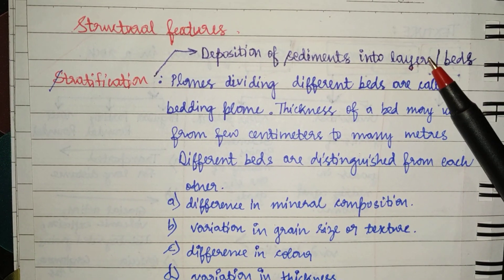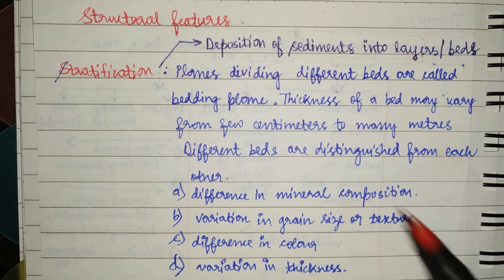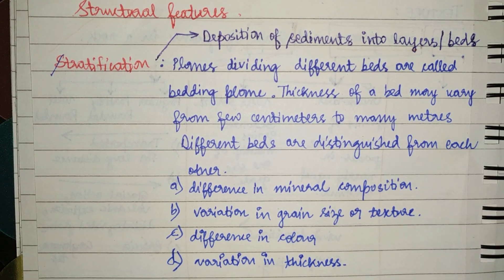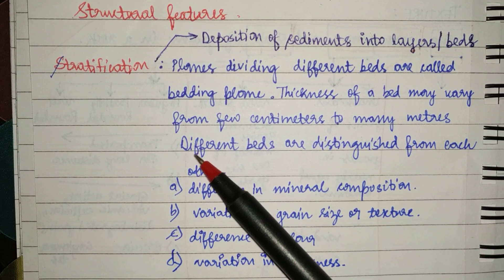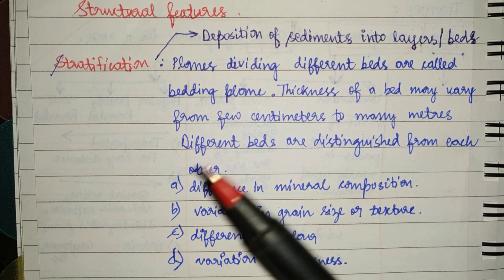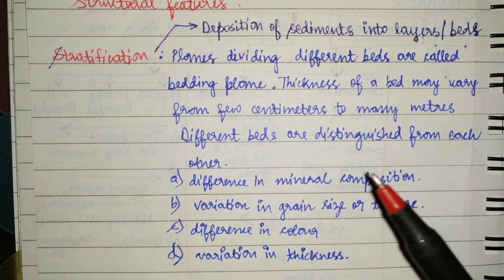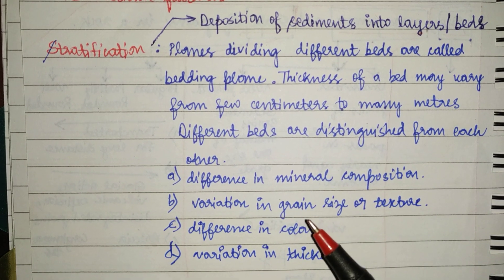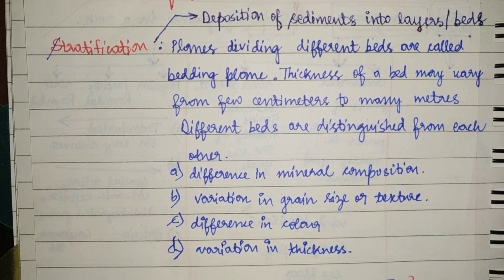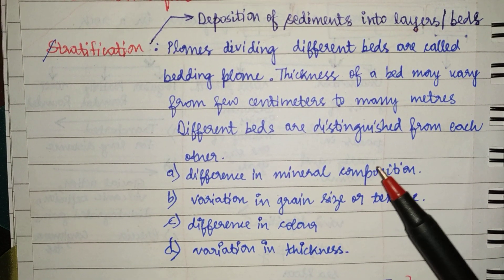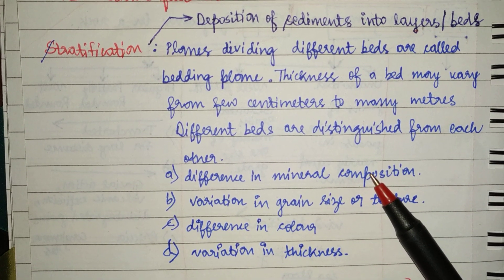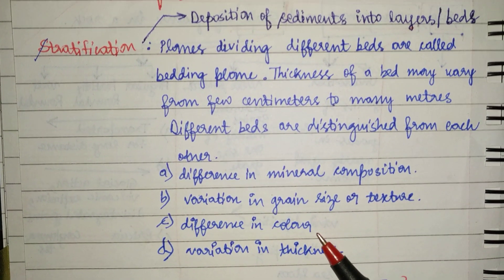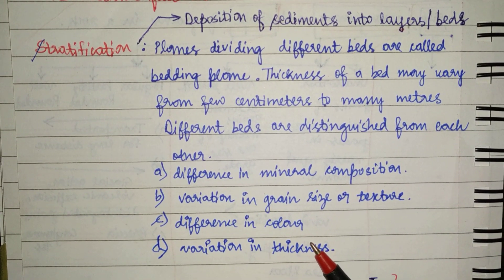The plane dividing two beds is called a bedding plane. The thickness of a bed may vary from a few centimeters to many meters. Two beds are distinguished based on mineral composition, grain size or texture, color (which indirectly indicates mineral composition), and variation of thickness. So that's stratification.